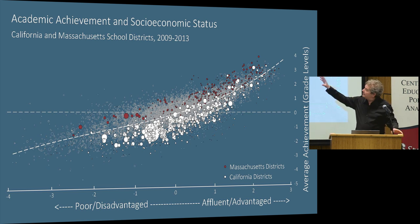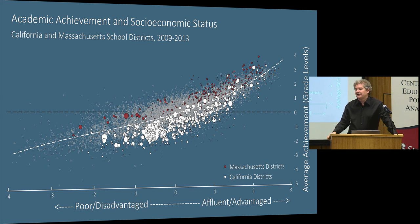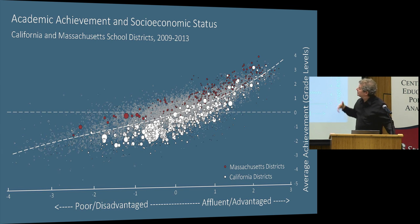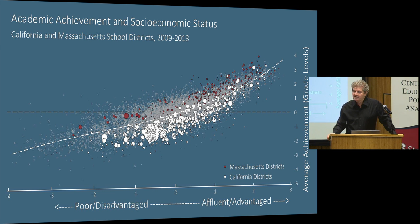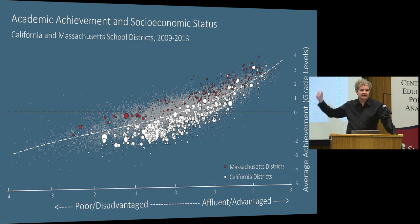You may have noticed that Massachusetts was greenish on that map and California was purplish. If we highlight school districts in California in white and Massachusetts in red, Massachusetts is higher-achieving not just because it has more high-income districts — it does — but even among districts with the same level of socioeconomic conditions, California districts have much lower average performance than comparably low-income districts in Massachusetts. That suggests some of this variation isn't just a local factor but may reflect state-level conditions: state policy, funding for preschool, funding for K-12 education.